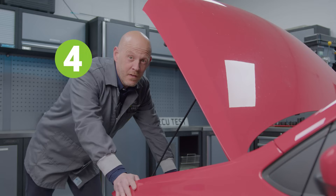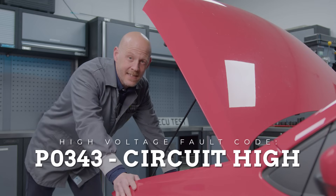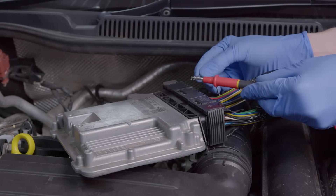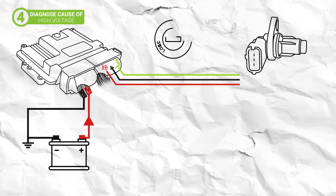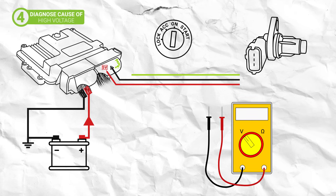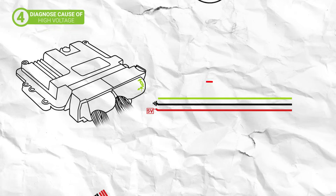If you have a high voltage fault code and the multimeter reading was higher than expected when testing at the ECU connector, you may have a short to voltage within the circuit. The testing method for this is similar to the previous one. Disconnect the ECU connector and remove the affected terminal before plugging the connector back in. Then probe at the removed terminal end and if voltage remains in the wire, then there is a short to voltage present within the wiring loom.